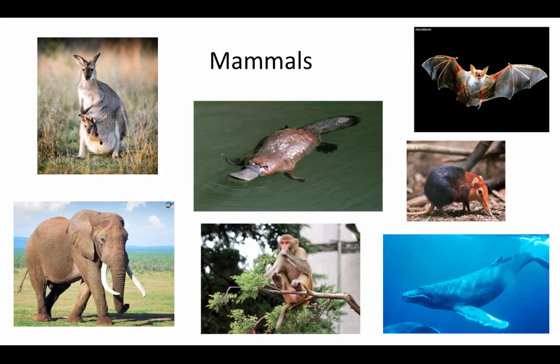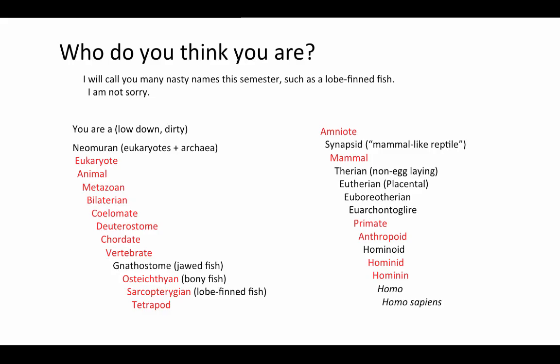Here are examples of lots of different kinds of mammals: one of those monotremes — non-therian, egg-laying mammals — is the platypus. An example of a metatherian marsupial is the kangaroo. And then there are a number of different placental mammals that we know and love. For those of you who watched the Crash Course video on the chordates where Hank posed the question 'who do you think you are?' — he gave what I consider a fairly incomplete and very Linnaean taxonomic answer. Over the course of this semester, I will call you many names such as lobe-fin fish and bony fish. I'm not sorry — this is cladistically quite correct.